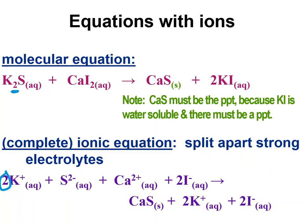So to get my complete ionic I split apart everything that is a strong electrolyte, and if you'll notice I did not split apart this. This says solid and so it is a solid here and it's not split up. This is our precipitate. So everything but the solid is split apart. These are all ionic.